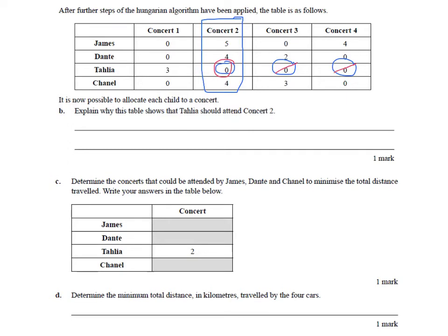Part C asks us to determine the concerts that could be attended by James, Dante, and Chanel to minimize the total distance traveled. We already know Talia is going to concert 2 and that she no longer is the best fit for concert 3 and 4. By working our way through the table, if Talia doesn't go to concert 3, the only other possible allocation should be James. So James should go to concert 3. If James is going to concert 3, then he doesn't need to go to concert 1, which means we have two choices here for concert 1, either Dante or Chanel. And if we look in column 4, we also have two possible allocations there, Dante or Chanel.